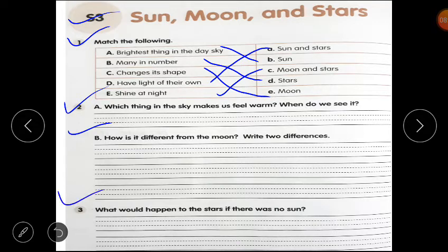Question number three: What would happen to the stars if there was no sun? Agar sun nahi hota, to stars ke saath kya hota? We can see stars in the whole day. Hamein poore din mein sirf stars hi nazar aate because they would not be hidden by sunlight. Kyunki day time mein bhi stars hote hai, lekin hum sunlight ki karan unko dekh nahi paate. So you have to complete this worksheet.